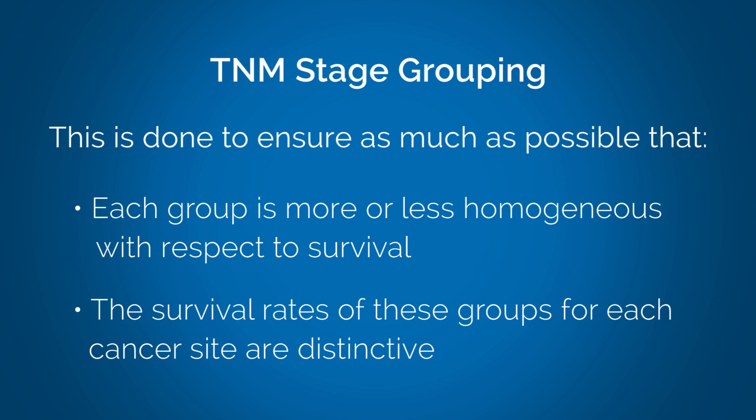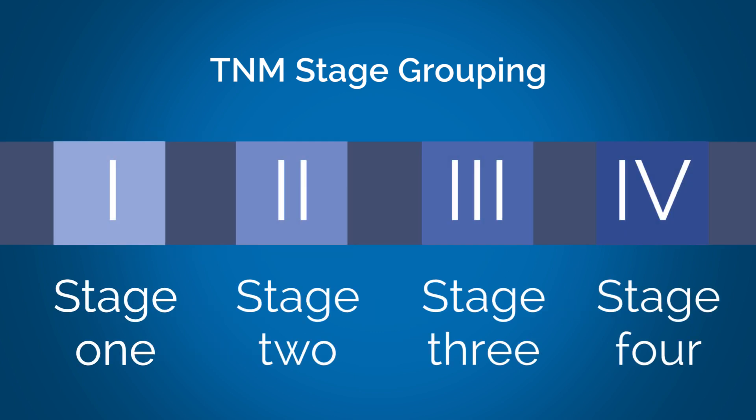It is because of this, and because there is more information known about prognosis, that the simple definitions of stage group described before may not hold true. In some cancers, large tumors still confined to the organ of origin may have a worse survival than small tumors that have spread to a single node.